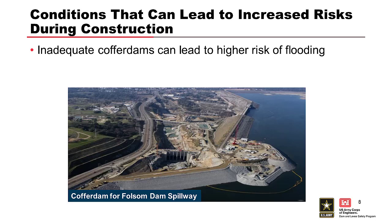Cofferdams can increase the risk of flooding if not properly designed. This photograph is from a cofferdam at Folsom Dam where the spillway construction risk is mitigated by constructing the cofferdam at the full height — the same height as the main dam — to provide the same level of protection. This cofferdam protected the work for the construction of a new spillway, which had been completed just a few years ago.